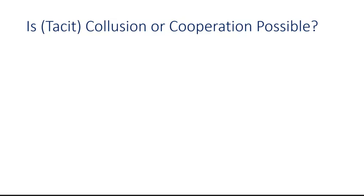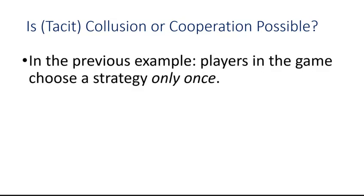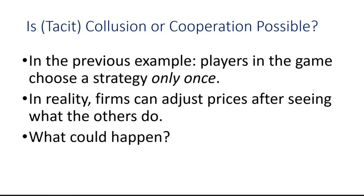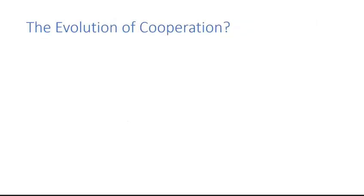Tacit means that the businesses involved don't talk to each other, but they observe each other's behavior and act accordingly. In the simple prisoner's dilemma, players choose a strategy once and commit to it, but in reality firms can adjust their prices and respond to what other firms do. The question is: what could happen if firms can adjust their strategies, and is it possible to evolve some kind of cooperation between the players?